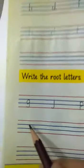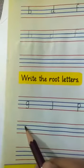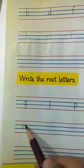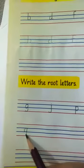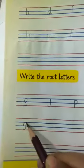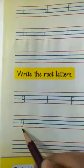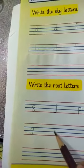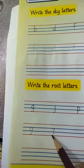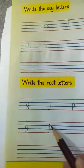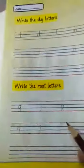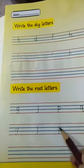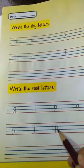When you are writing root letters, you will touch the last three lines. This is letter G — G is a root letter because it is touching the last three lines. Next, you will write letter J. J is a root letter because it is touching the last three lines. This is letter P — P is a root letter.